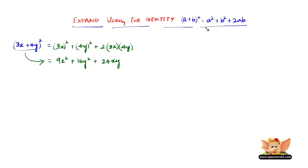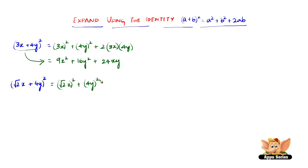Let us take another one: root 2x plus 4y the whole square. This is also going to be similar, except that the numbers have changed. In the place of a it is root 2x, and in the place of b it is 4y. So it will be root 2x the whole square plus 4y the whole square plus 2 into root 2x, because root 2x is a, into 4y, which is b.